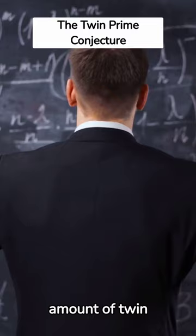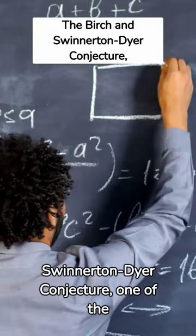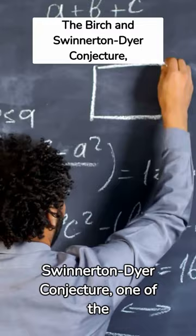The last on our list is the Birch and Swinnerton-Dyer Conjecture, one of the seven famous Millennium Prize problems challenging mathematicians to unravel its mysteries and provide a rigorous proof.